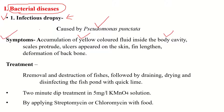The symptoms of Infectious Dropsy are: accumulation of yellow colored fluid inside the body cavity, scales protrude, ulcers appear on the skin, fins lengthen (increased fin length), and deformation of the backbone. The fishes also try to jump out of the water due to the approach of Pseudomonas punctata infection.